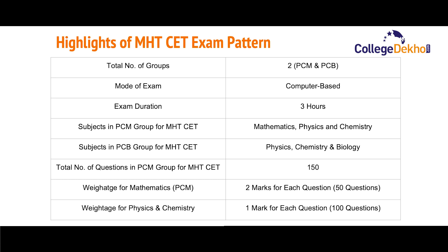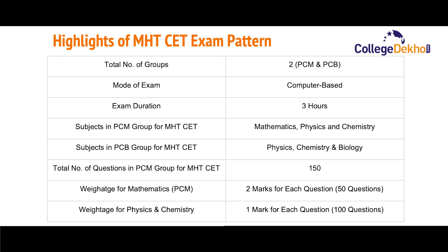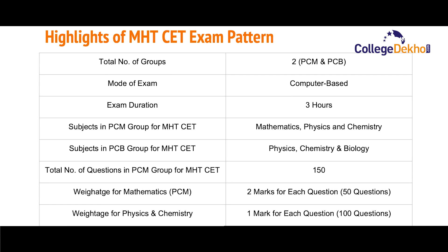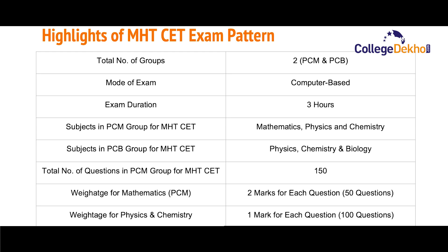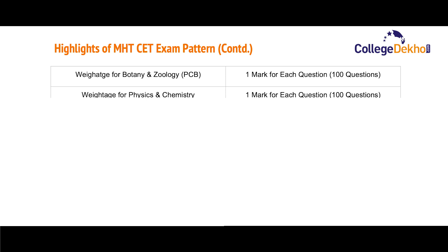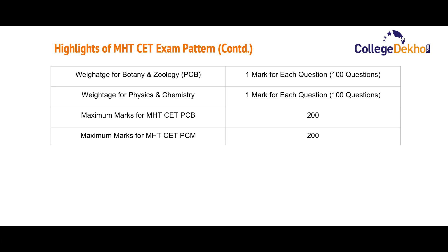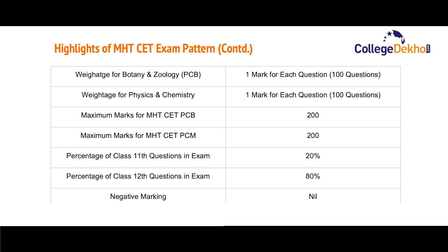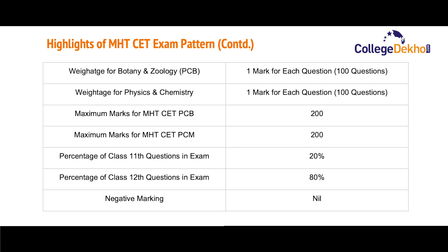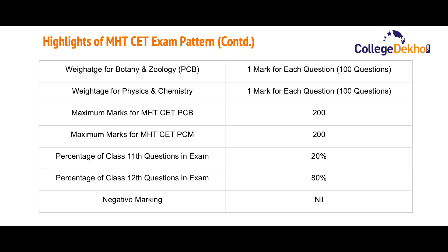The subjects in the PCM group will be Mathematics, Physics, and Chemistry, and for the PCB group it will be Physics, Chemistry, and Biology. The total number of questions in the PCM group will be 150. The weightage for Mathematics will be two marks per question, totaling 50 questions, and for Physics and Chemistry it will be one mark per question, totaling 100 questions. The maximum marks for both the PCB and PCM groups will be 200. The percentage of Class 11th questions in the exam will be 20%, while 80% will be from the Class 12th syllabus.